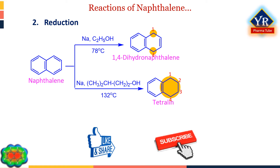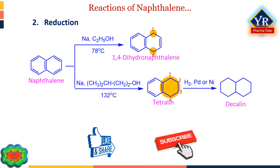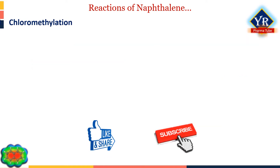Naphthalene is also reduced to 1,2,3,4-tetrahydronaphthalene, known as tetralin, by the action of sodium and higher boiling isopentyl alcohol (3-methylbutanol) at 132°C. Tetrahydronaphthalene is simply a dialkyl derivative of benzene. Catalytic reduction completely hydrogenates both rings of naphthalene and produces decalin, or decahydronaphthalene.